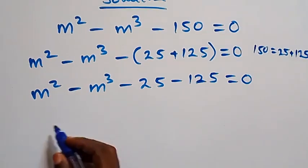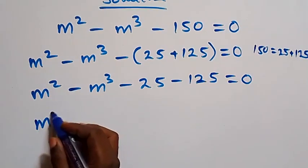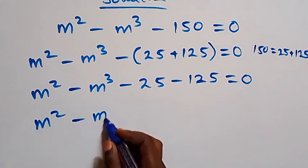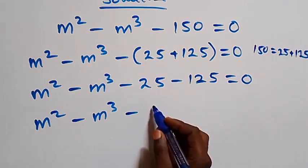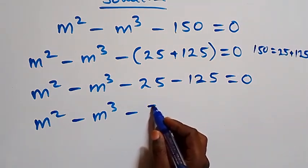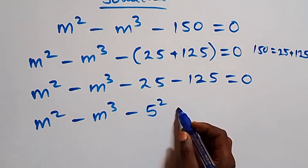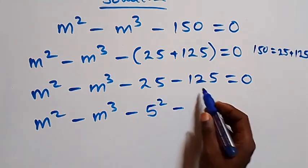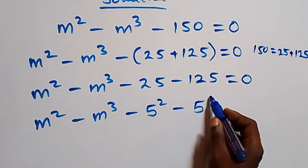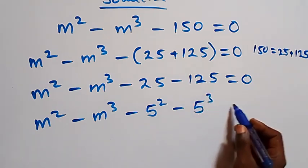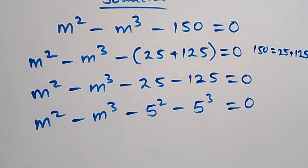We can write this as m squared minus m cubed minus 25, which we write as five squared — that's five times five — then minus 125, that's five raised to the power three — five multiplied three times — and equals zero.